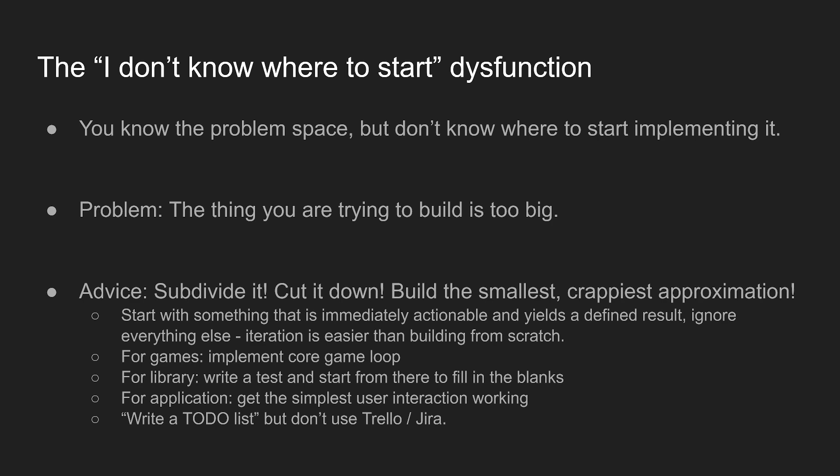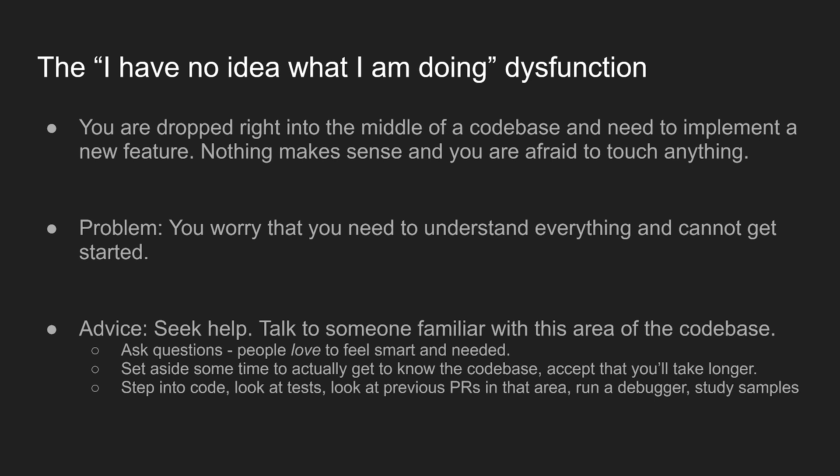The second dysfunction is the 'I have no idea what I'm doing' dysfunction. This typically looks like: you're dropped into the middle of a codebase you don't know and need to implement a new feature, and nothing makes sense to you. You're afraid to touch anything — will it break if I touch that? I don't know what happens if I call that function. The problem is you worry that you need to understand everything and can't get anything done at all. Besides building a crappy approximation first, if you have to interact with something, that part you probably need to understand — so how about you start by seeking help?